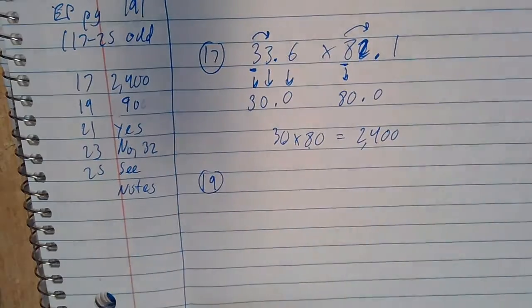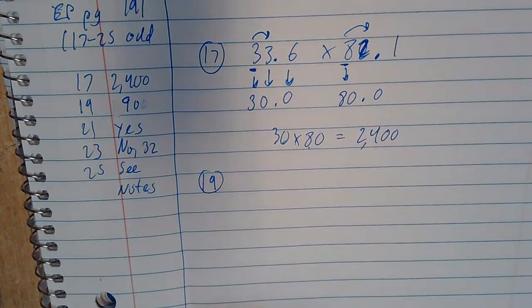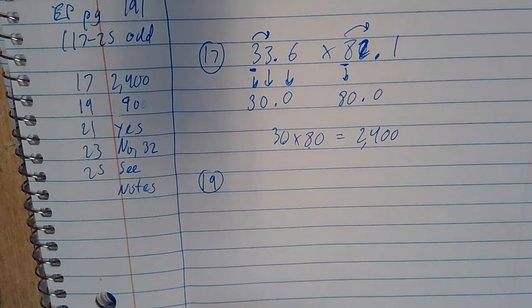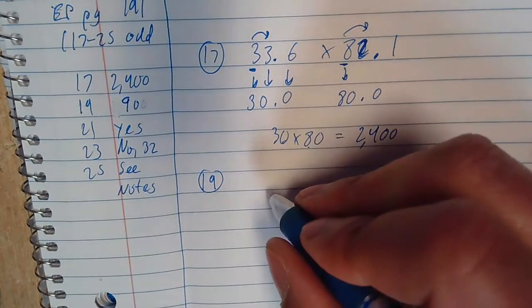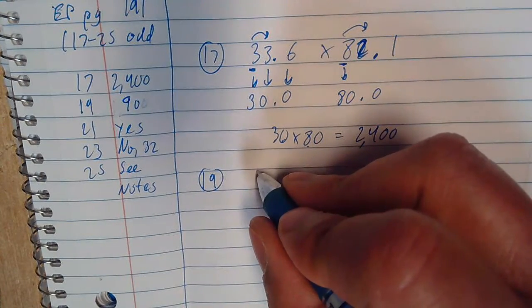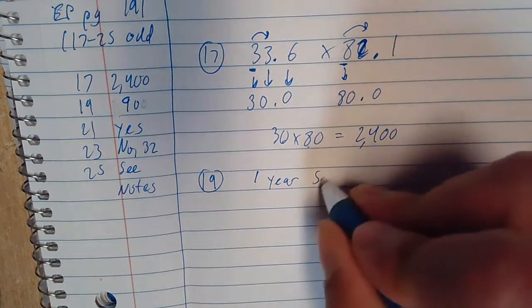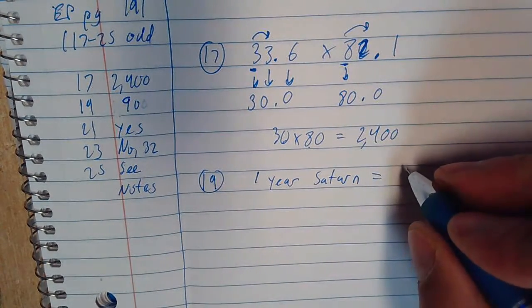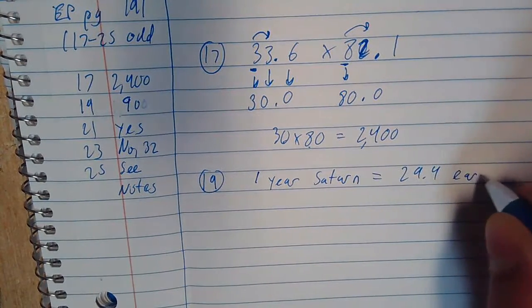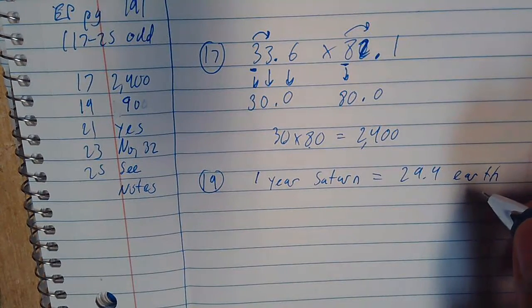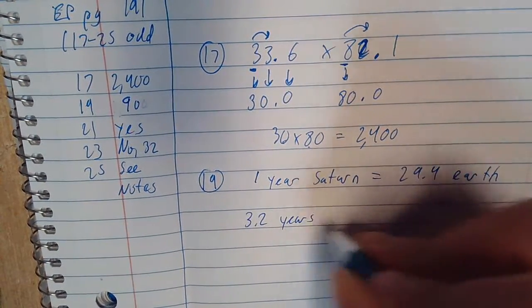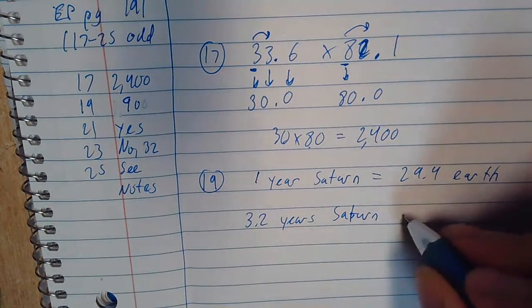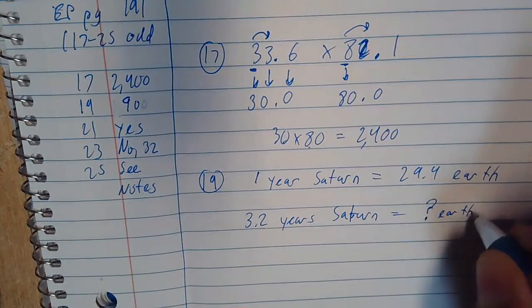Those are just little tricks you learn as you do math. Number 19. A single year on Saturn is equal to 29.4 years on Earth. But how many Earth years are equal to 3.2 years on Saturn? Okay, it's kind of a ratio deal here. So, just for the sake of argument, one year Saturn equals 29.4 years Earth.